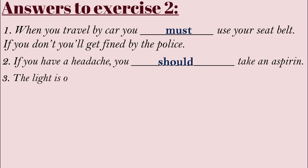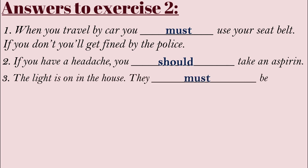Number three: 'The light is on in the house — they must be at home.' Here it's not an obligation; it's a logical deduction. When we see lights on in a house, it means people are inside. We make a positive logical deduction — nobody goes out and leaves the lights on.